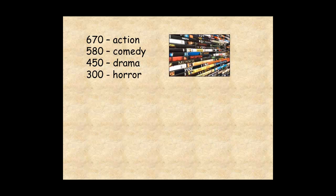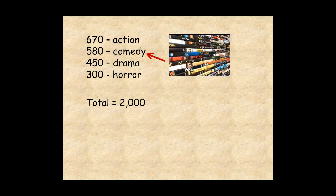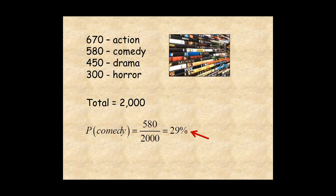Theoretical and experimental probability can be used to make predictions of future events. For example, here's a list of DVDs sold last year by a certain store. Out of 2,000 DVDs sold, 580 were comedies. So the probability that a customer will buy a comedy DVD is 580 over 2,000, or about 29%. Then, assuming this trend continues, when buying 5,000 DVDs for this year, the owner should make 29% of them comedies.